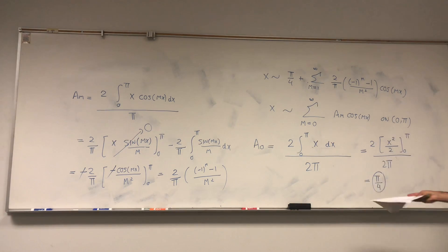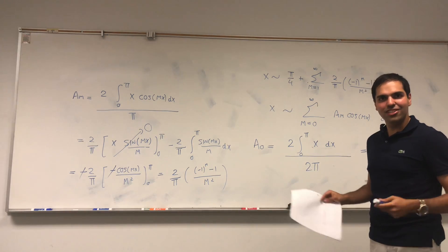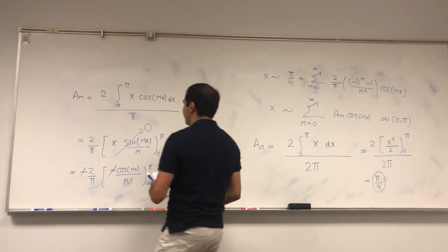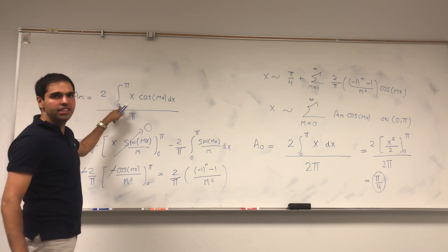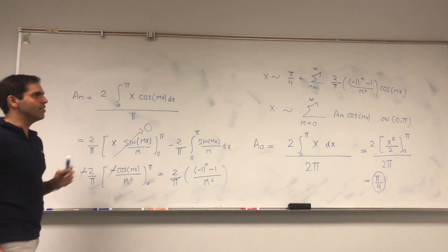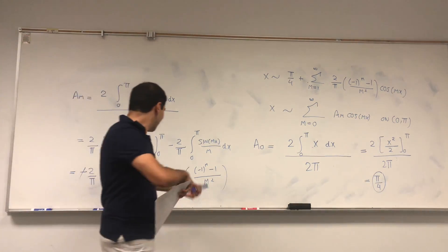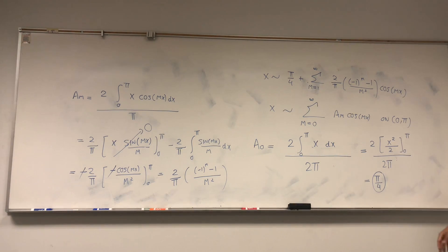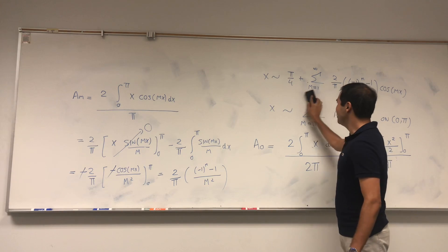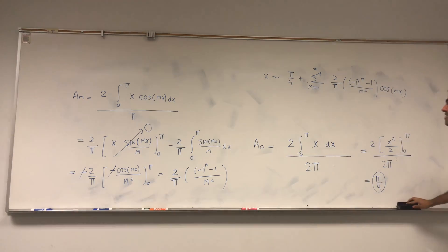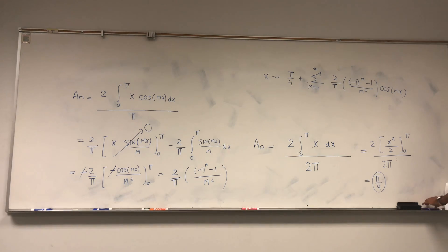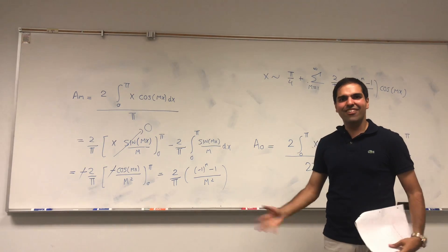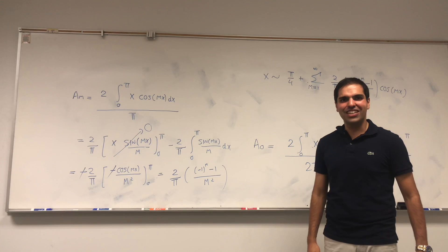So x has Fourier cosine series pi over 4 plus sum from m equals 1 to infinity of 2 over pi times ((minus 1)^m minus 1) over m squared times cosine mx. Finding the cosine and sine series is almost as easy as finding the full Fourier series — the only difference is you multiply the top by two and integrate from zero to pi instead of minus pi to pi. Underlying this process is the evenification or oddification, which is pretty useful. All right, I hope you liked this little excursion into Fourier land. Please subscribe to my channel. Thank you very much.